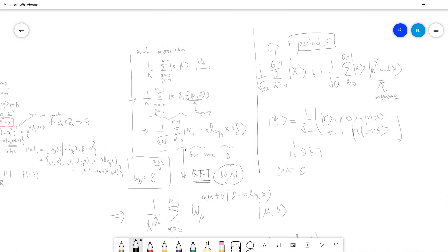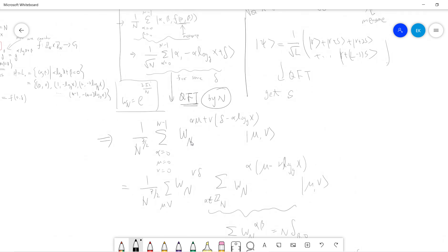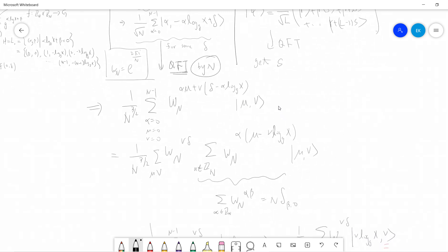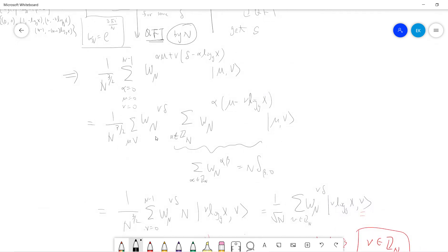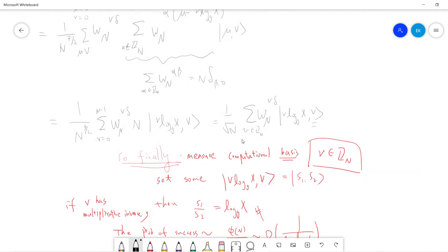The same thing happens here. The difference is that now we have two states. We apply omega_n, exponential 2πi divided by n - this is the Fourier transform - and we apply it. It becomes alpha mu, so basically there's a factor mu here. Then mu nu. Amazingly if you sum over alpha then you get the Dirac delta symbol.